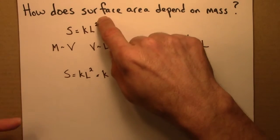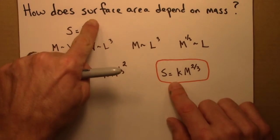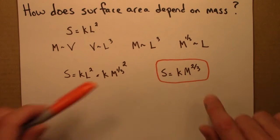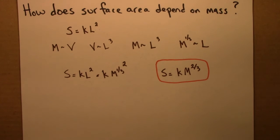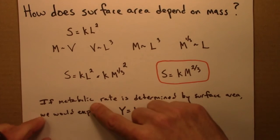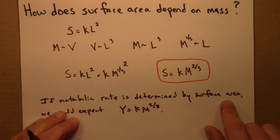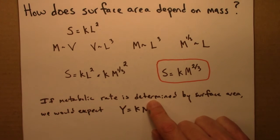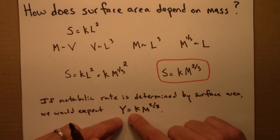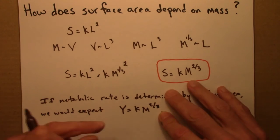So if metabolic rate was controlled by surface area, we would expect metabolic rate to scale like this. If the metabolic rate is determined by surface area, and by determined I mean that's the main limiting factor, there's going to be some variation from organism to organism, and the data doesn't fall perfectly on a line. But if the main determinative factor for metabolic rate is surface area, then we would expect metabolic rate Y to scale with M to the 2 thirds. But that's not what we see.